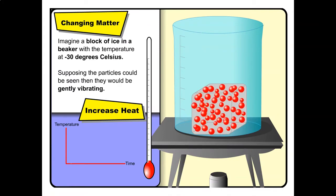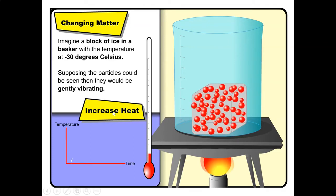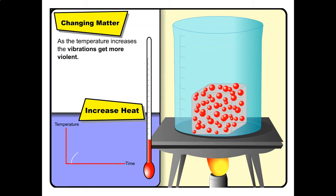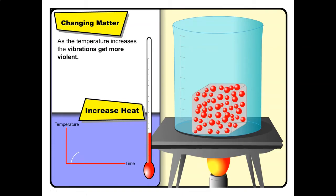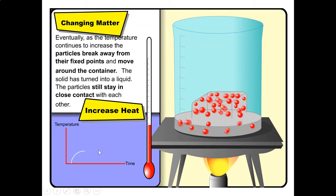Let's take a look at a short animation. Imagine there is a block of ice in a beaker at negative 30 degrees Celsius. The melting point of ice is zero degrees Celsius, so it exists as a solid. Now if we increase the temperature and light the Bunsen burner, the heating curve shows temperature rising. The solid particles vibrate more vigorously because they have more heat energy, and the graph starts to level off into a flat part.